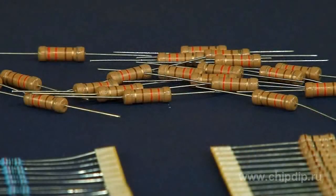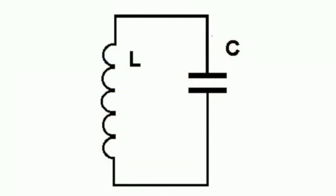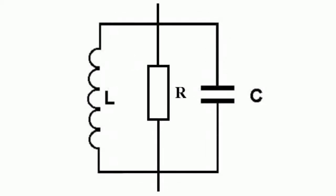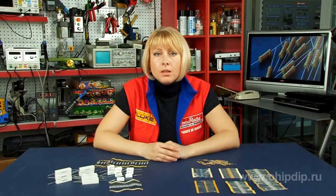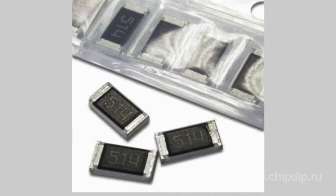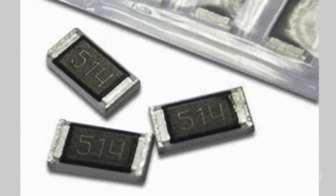A parallel connection of resistors is used in wireless devices to degrade the quality factor of a parallel oscillating loop and extend its bandwidth. When selecting a resistor, one should choose resistors with a minimum reactance, for example, chip resistors.